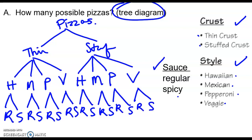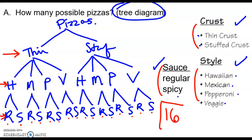If I count the bottom row, there are 16 different pizzas we could come up with. For example: thin Hawaiian regular, thin Hawaiian spicy, thin Mexican regular, thin Mexican spicy, and so on. You can follow the different branches of your tree to find all the different combinations. That's a tree diagram.